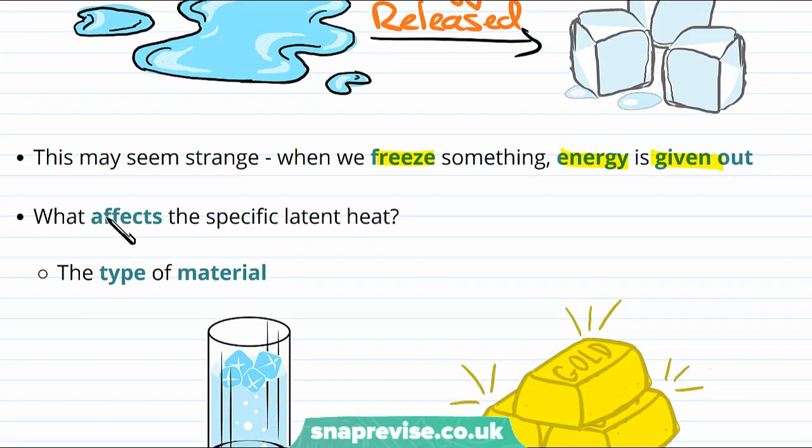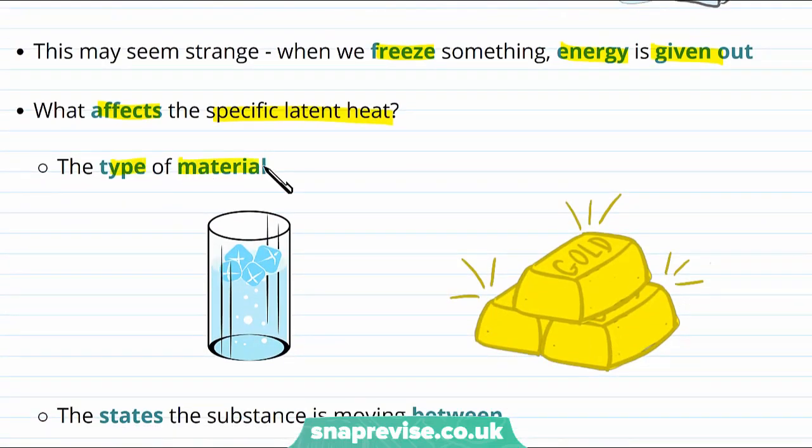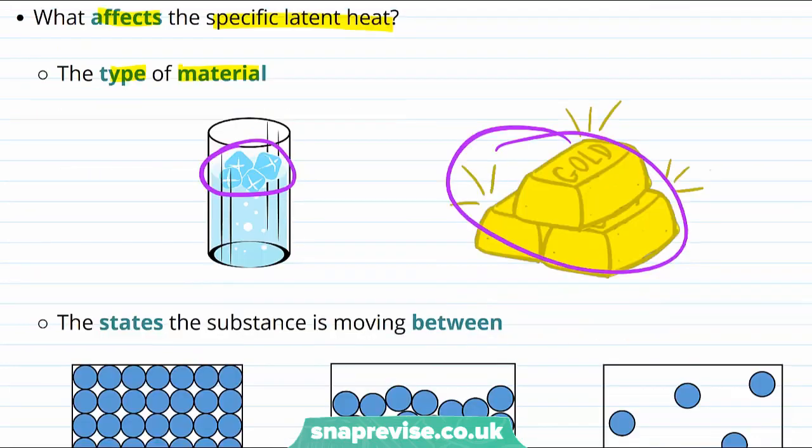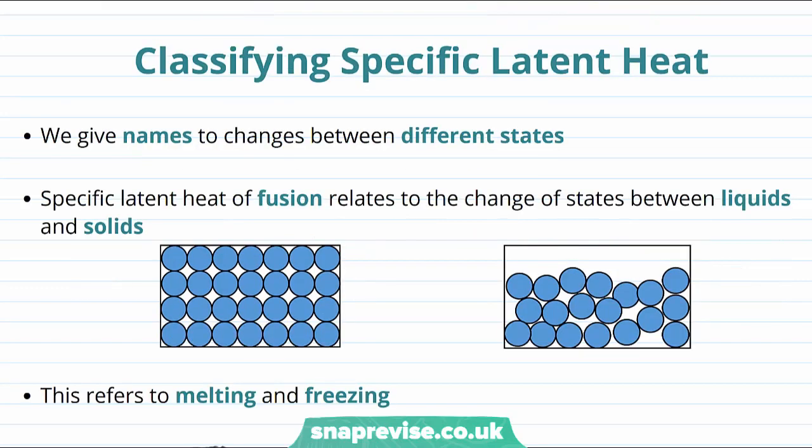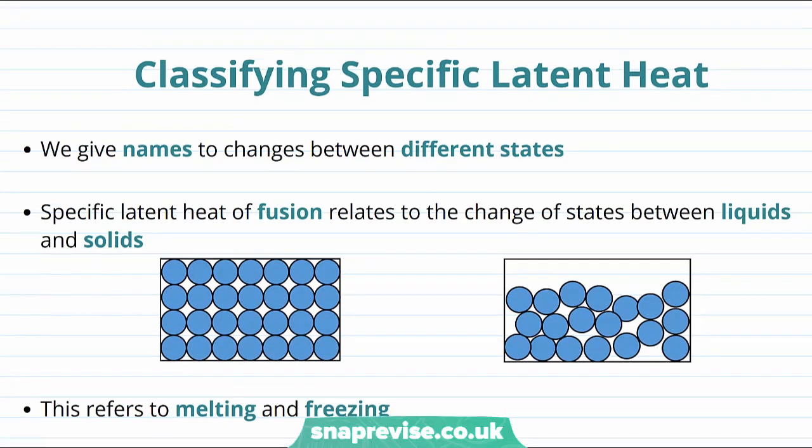Going back to specific latent heat, what actually affects the specific latent heat? The type of material certainly affects it. For example, it takes a lot less energy to melt ice than it does to melt gold. The specific latent heat also depends on the states of matter that the substance is actually moving in between. For example, it could take more energy to go from solid to liquid than it would to go from liquid to gas.